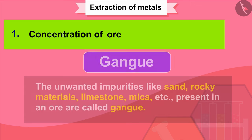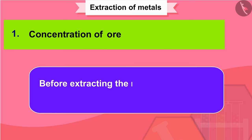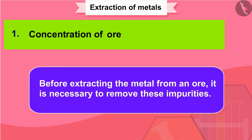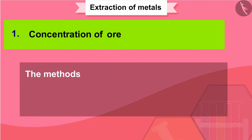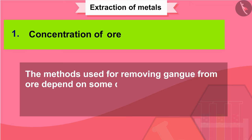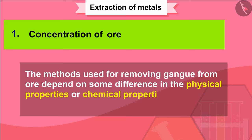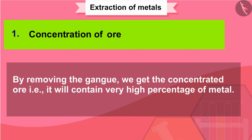Before extracting the metal from an ore, it is necessary to remove these impurities. The methods used for removing gangue from ore depend on some difference in the physical or chemical properties of the ore and the gangue. By removing the gangue we get the concentrated ore, which will contain a very high percentage of the metal.